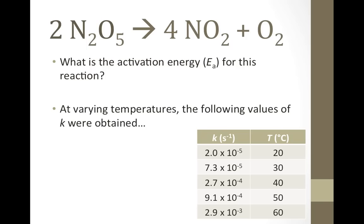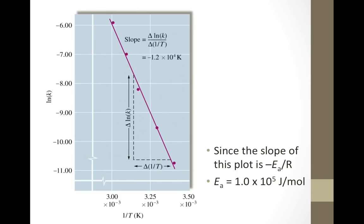Some quick calculations to determine the natural log of each of the k's and the inverse Kelvin temperature for each of the Celsius temperatures will allow us to prepare a graph of natural log of k versus 1 over T. It would look like this graph here.